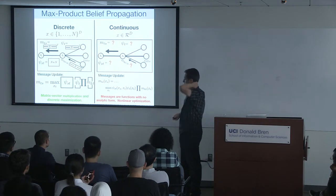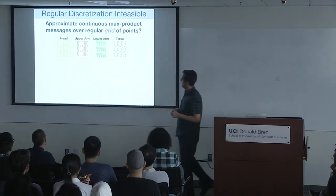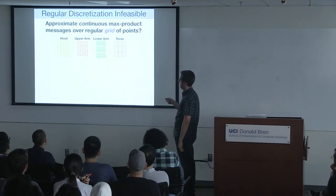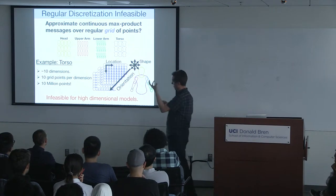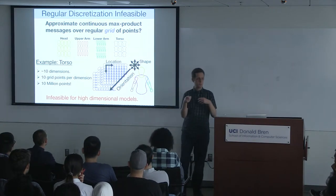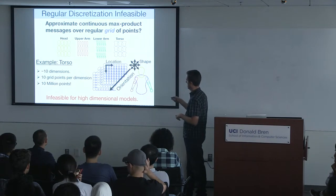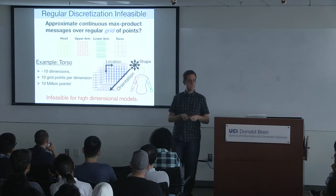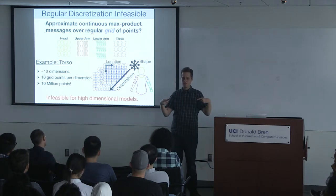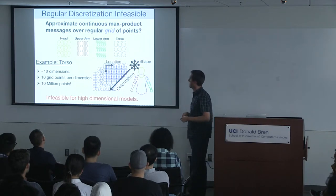You might say: just discretize. But even if you only took ten grid points per dimension, for a ten-dimensional state space (encoding position, orientation, shape, etc.) you'd have ten to the tenth — ten billion — states. For a pair of parts that's ten billion squared combinations. This is simply infeasible for the high-dimensional continuous models we care about. We don't want to run a supercomputer just to analyze one image.